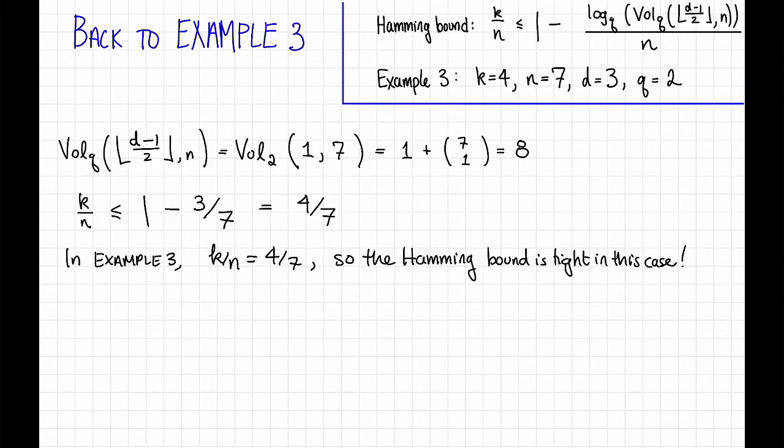So what does it mean for the Hamming bound to be tight? Well that means that this code, this example three that we saw with the circles, achieves the best possible trade-off between rate and distance at least when k equals four, n equals seven, q equals two. That's pretty neat.